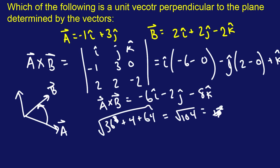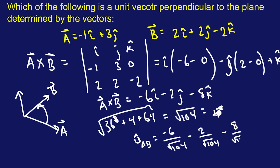So if you want the unit vector of A and B in the direction of A and B, you can do negative 6 over root 104, negative 2 over root 104, negative 8 over root 104. And that would be your unit vector. So that's how you solve that problem — pretty straightforward, a little bit complicated with the determinants. They do that to throw you off. Never used this in my career so far. I'll see you in the next one.